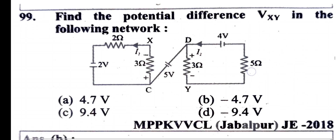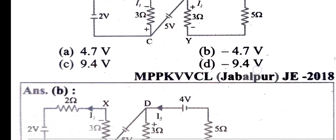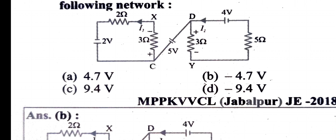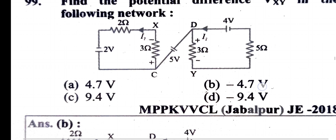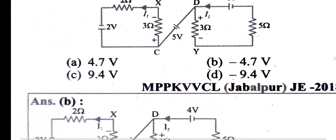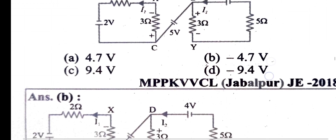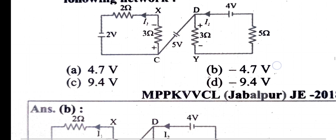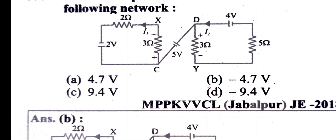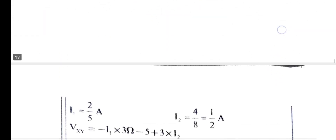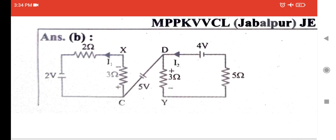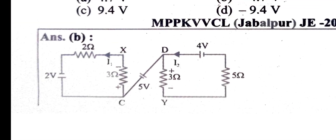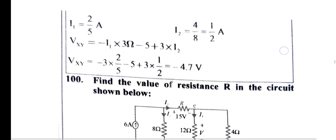Now we find the potential difference VXY. Rearranging the circuit, I1 flows through the same node path X–C–D–Y. The current I equals 2 divided by the series combination of 3 plus 2, giving I = 2/5 A. For I2 we have 4 divided by 5 in the other branch. Then VXY equals minus I1 times 3 ohm minus 5 times 3 times I2. Substituting the values of I1 and I2 gives 4.7 ohm.